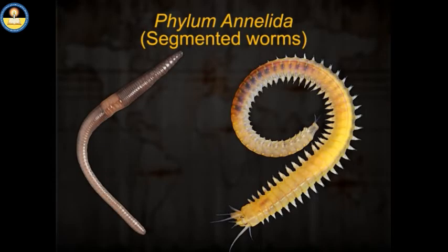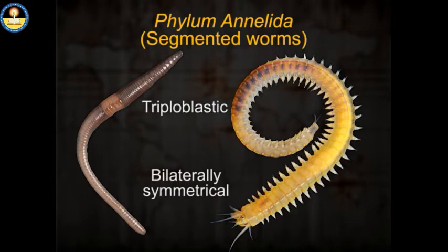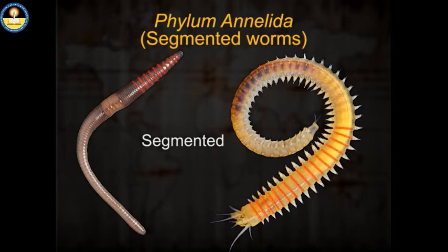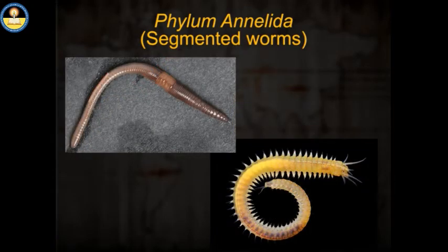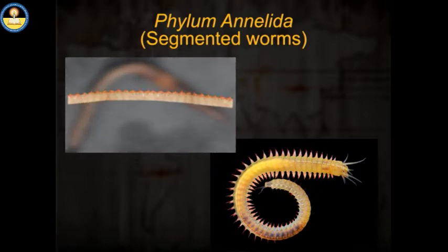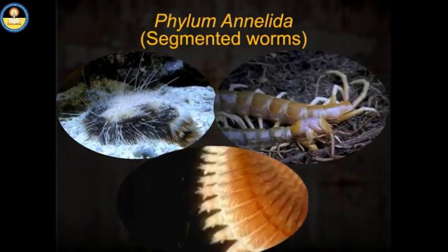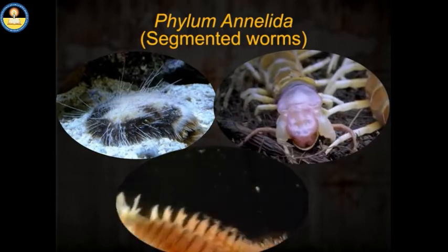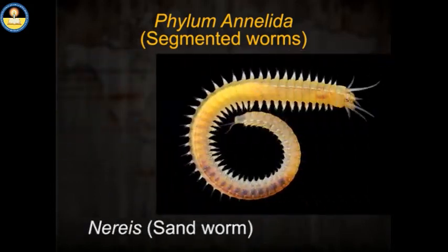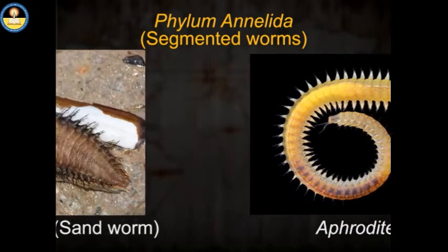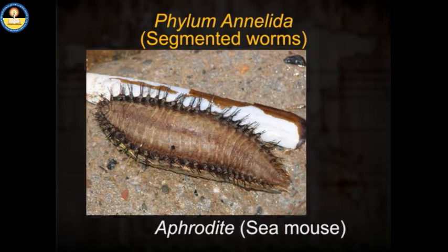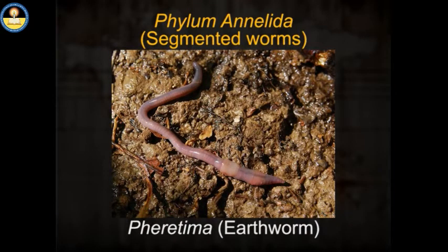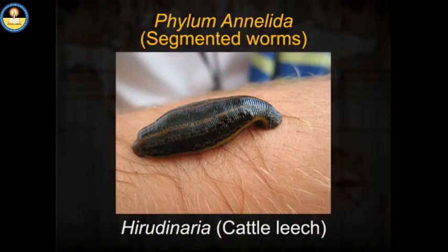Phylum Annelida — segmented worms. They are triploblastic and bilaterally symmetrical. The body cavity is a true coelom and is segmented. In some of these organisms, appendages like setae and parapodia are present for movement. They are found in fresh water, moist soil and marine water. Examples: Nereis (sandworm), Aphrodite (sea mouse), Pheretima (earthworm), and Hirudinaria (cattle leech).